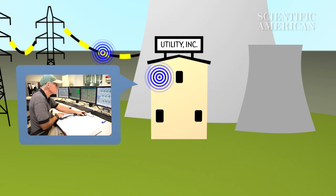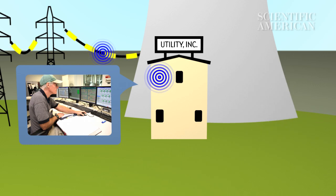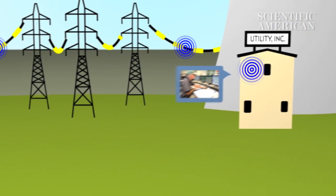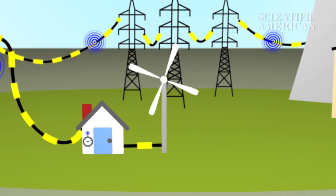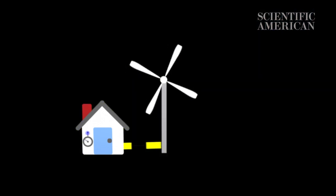And that means utilities can cut down on backup power plants and also use less reliable but cleaner electricity sources, like wind turbines or solar cells. In a world where energy needs to be cleaner, that just seems smart.